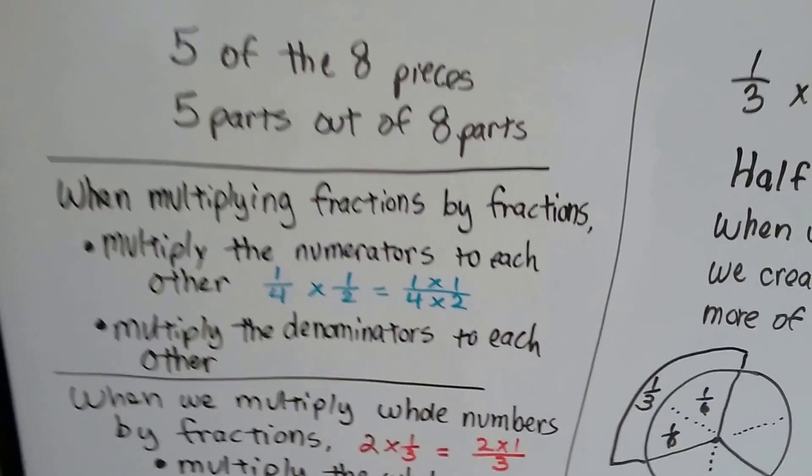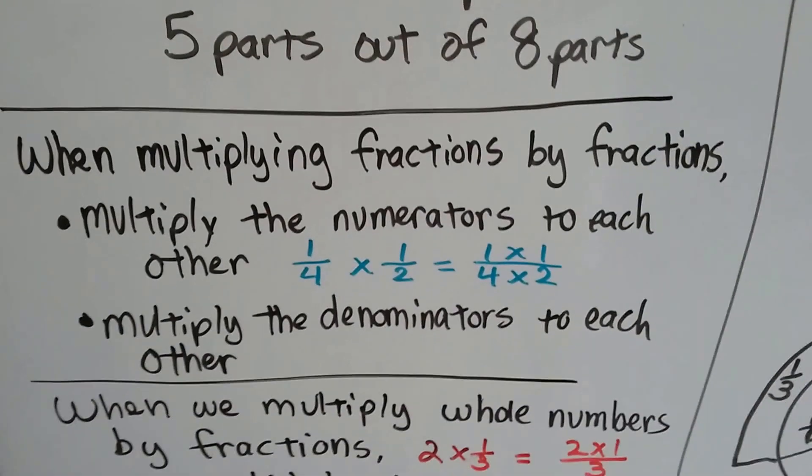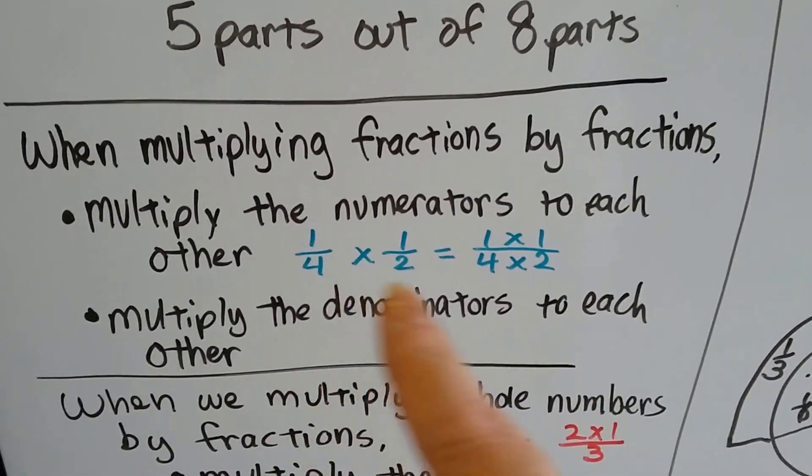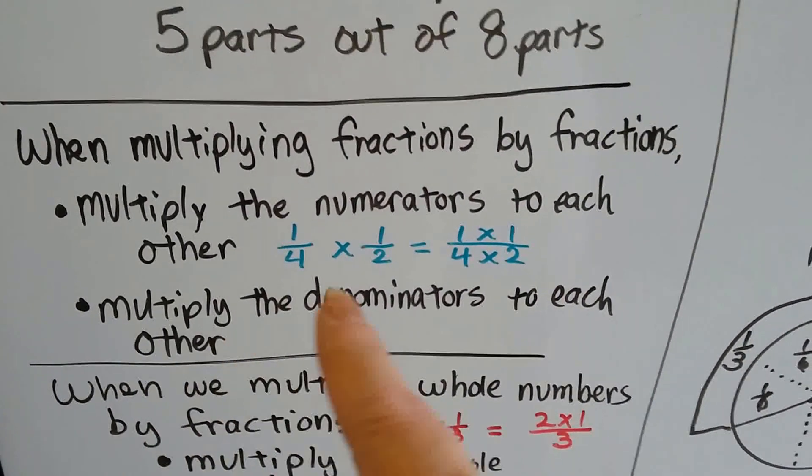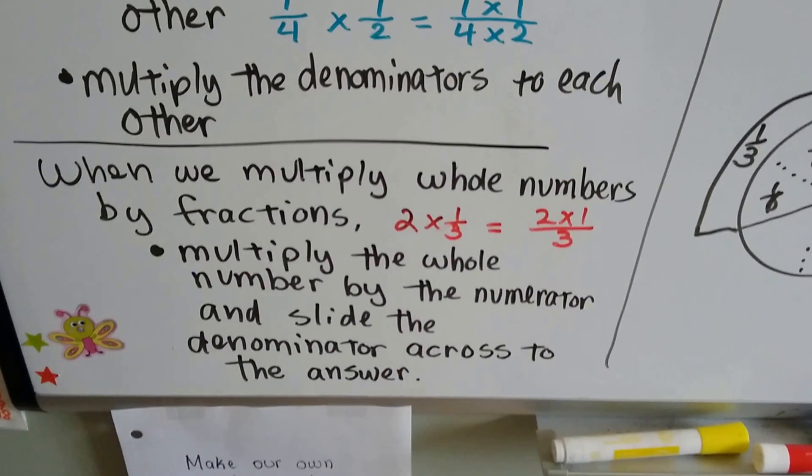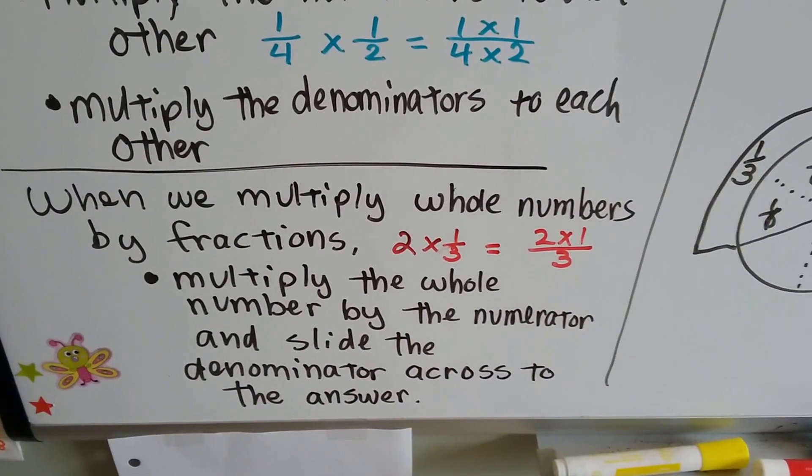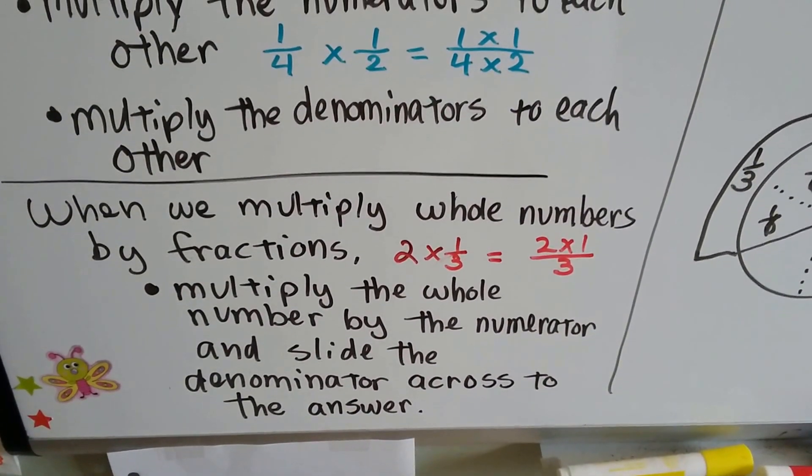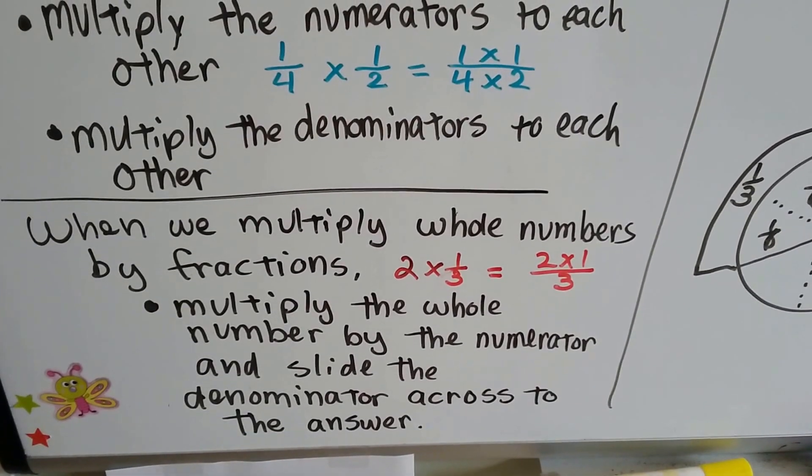So, when multiplying fractions by fractions, you multiply the numerators to each other and go straight across, and then you multiply the denominators by each other and go straight across. When we multiply whole numbers by fractions, we multiply the whole number by the numerator and slide the denominator across to the answer.